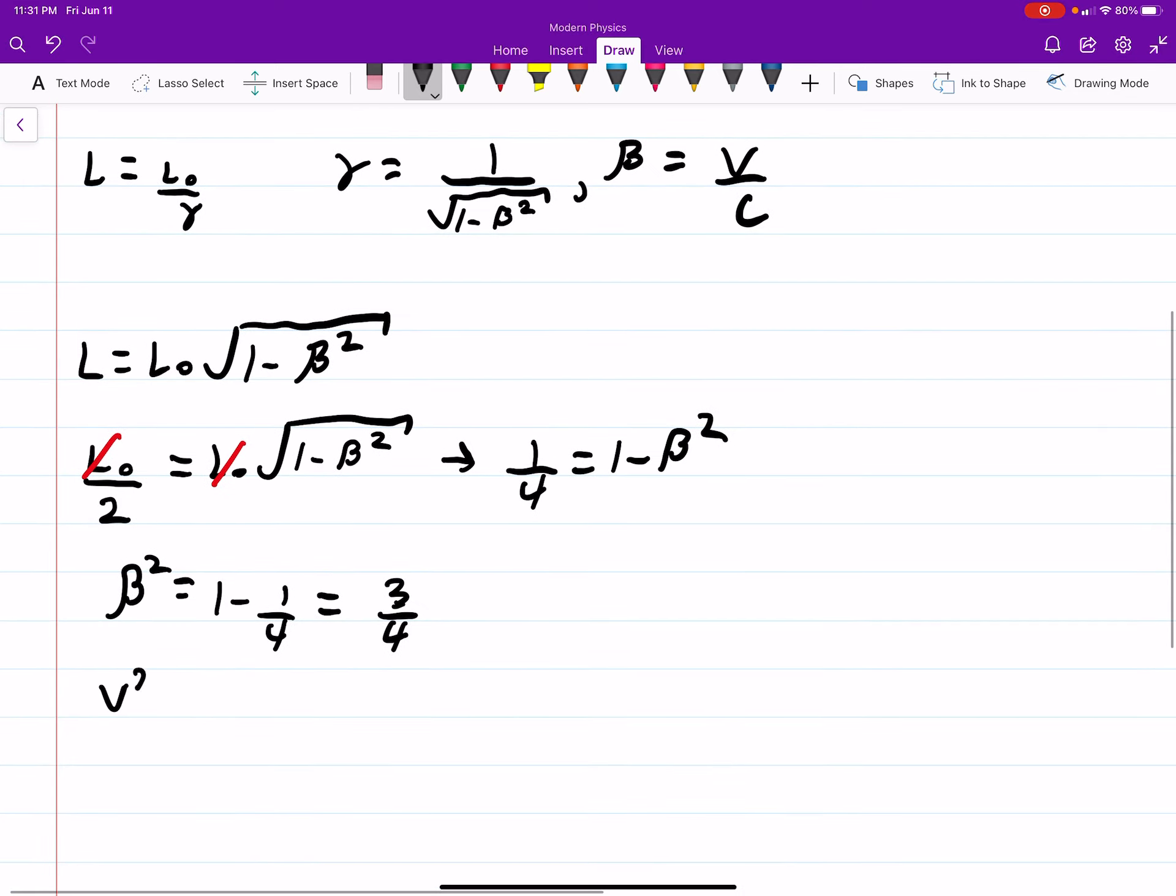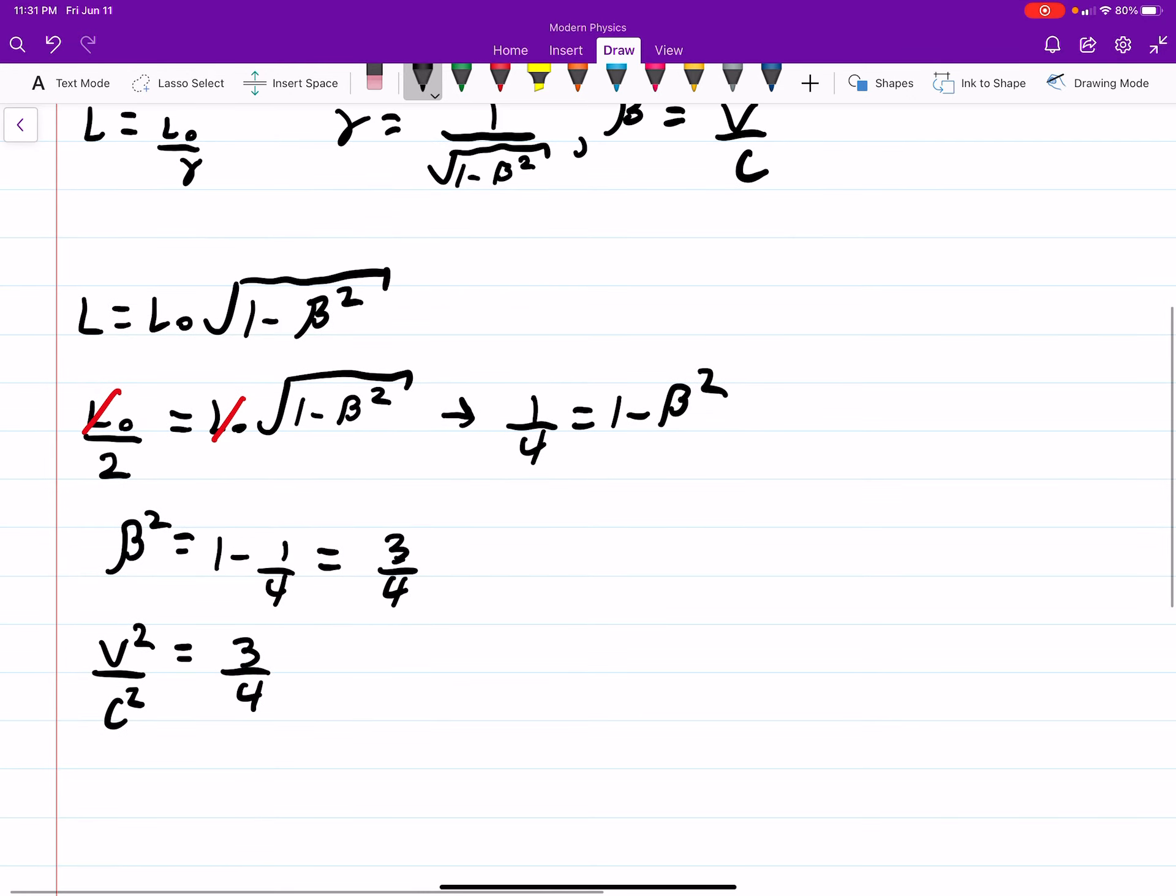And beta squared is V squared over C squared, like we defined it earlier, is equal to three-fourths. Then V squared is three-fourths C squared,